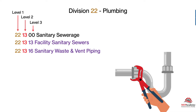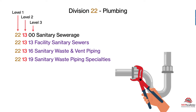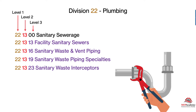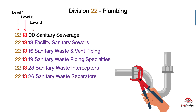That third level defines it better. Sanitary Waste Piping is still Level 1 — Division 22 Plumbing — Level 2 is Sanitary Sewage, but Level 3 is more definitive. Sanitary Waste Interceptors all fall under Sanitary Waste as well.